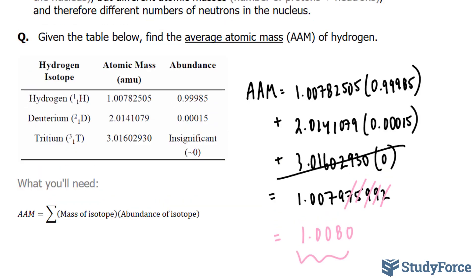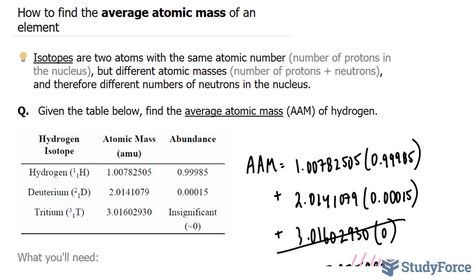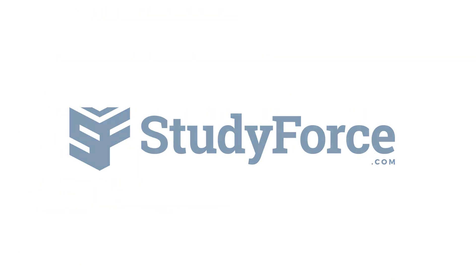And there you have it. That is how to find the average atomic mass of an element. If you found this tutorial helpful, please support our channel by subscribing or by liking this video. If you have any further questions, visit our website at studyforce.com. We're an online service for students seeking free homework help. See you soon.